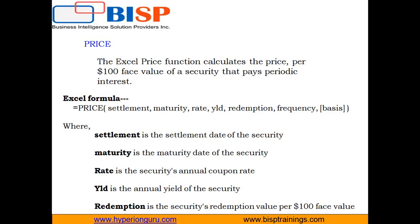The Price function has seven arguments. The first is the settlement date — the date that you gain ownership of the security. That date might be different from the bond's issuance date, which is the date the bond is made available for sale.